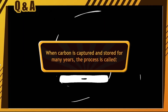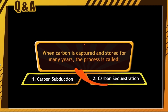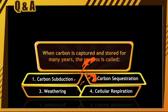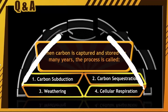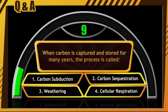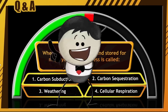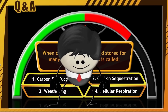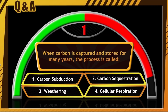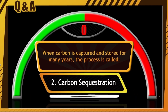Ready for the second one? When carbon is captured and stored for many years, the process is called: carbon subduction, carbon sequestration, weathering, or cellular respiration? The correct answer is option number 2 — carbon sequestration.